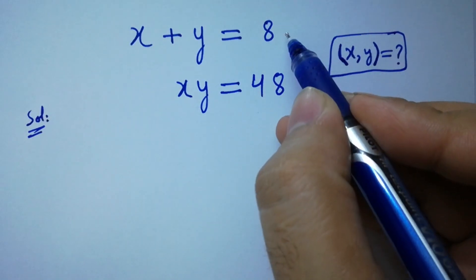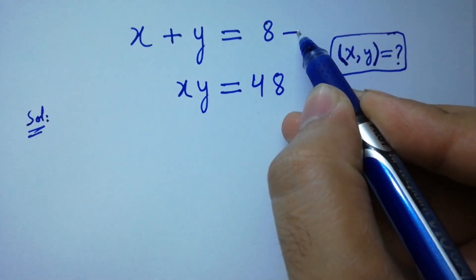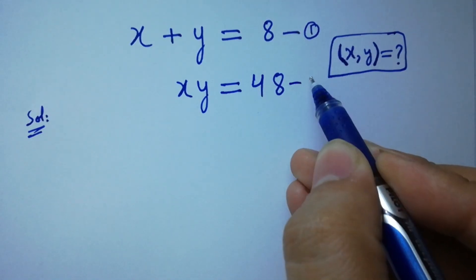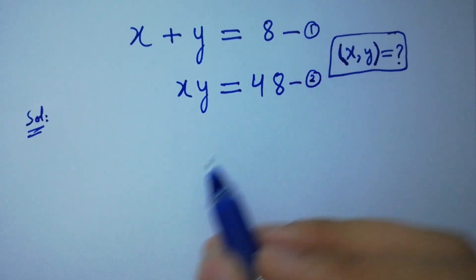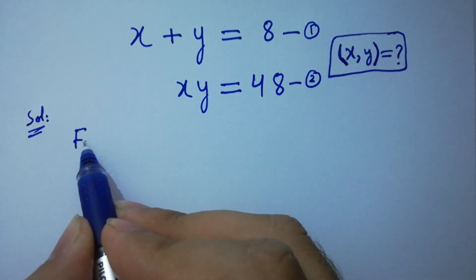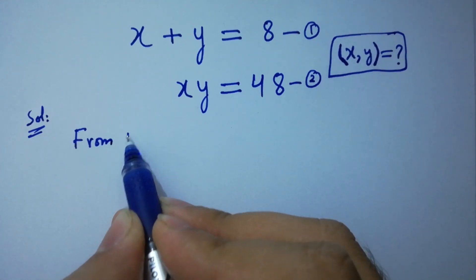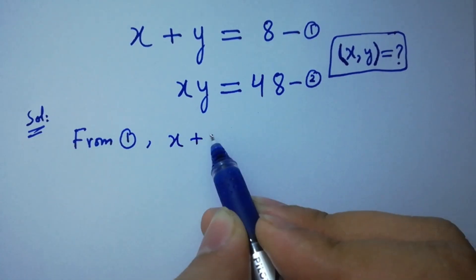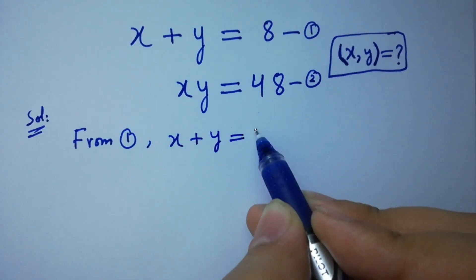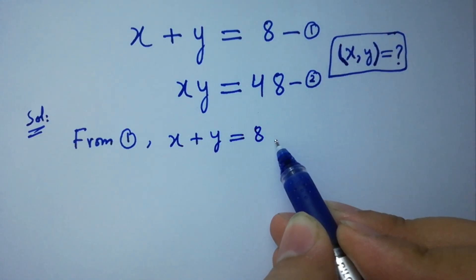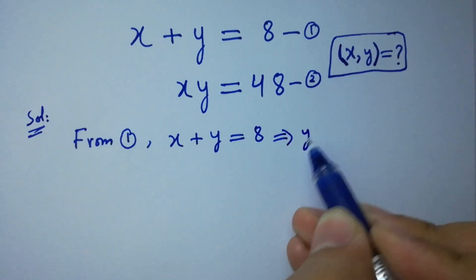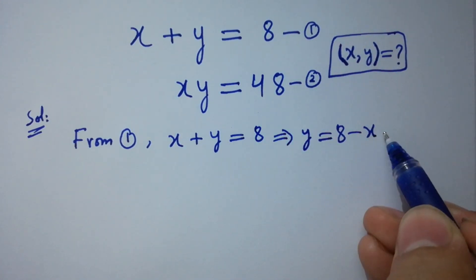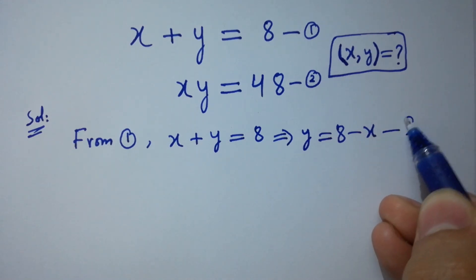Let x plus y equal to 8 be the first equation, and x times y equal to 48 be the second equation. From the first equation we have x plus y equal to 8, then y equal to 8 minus x. Let this be the third equation.